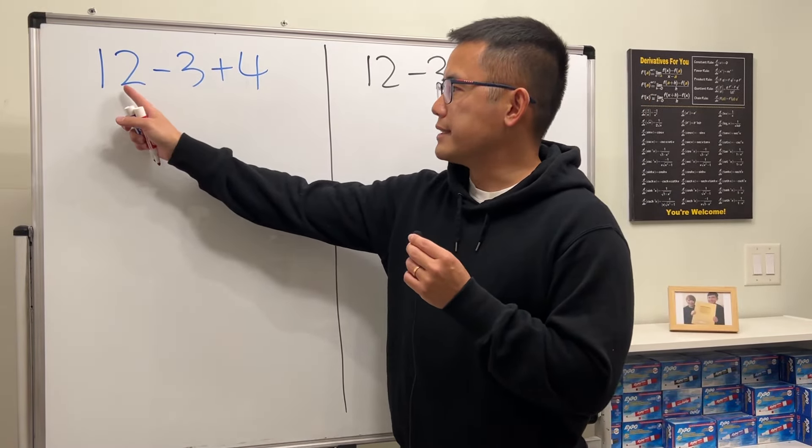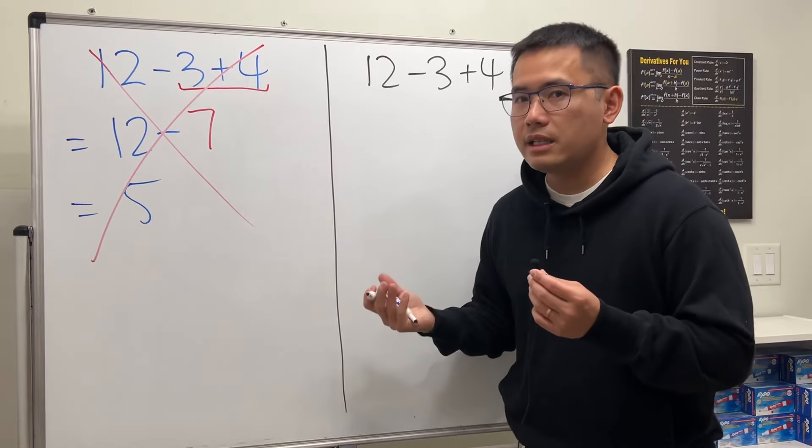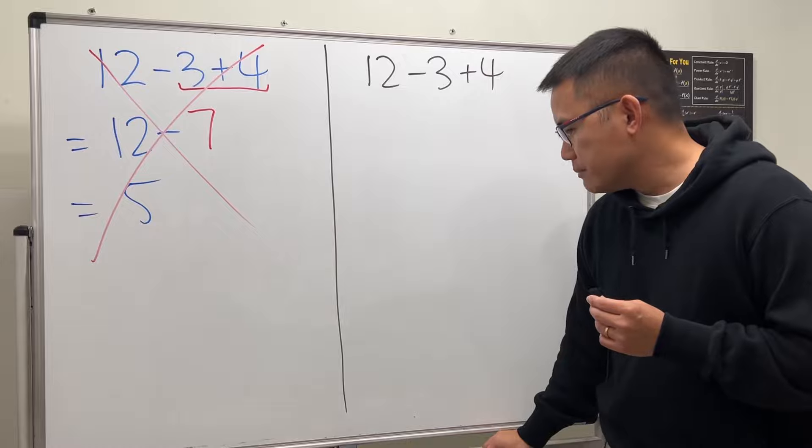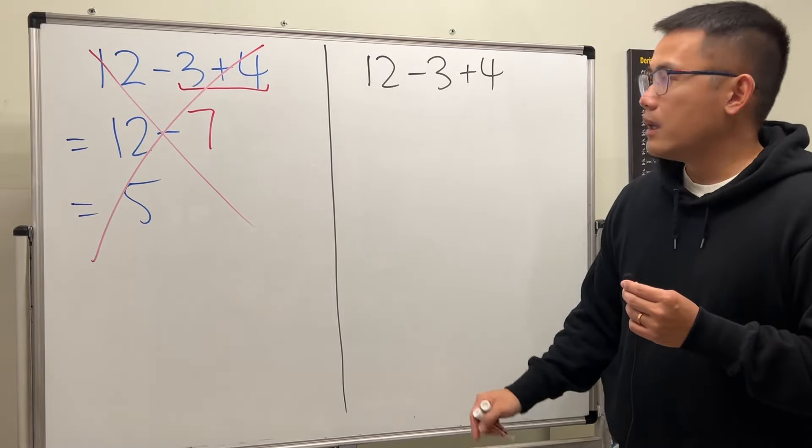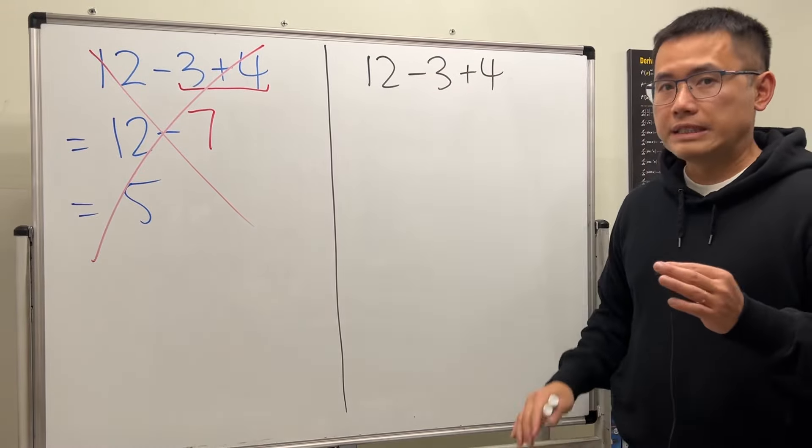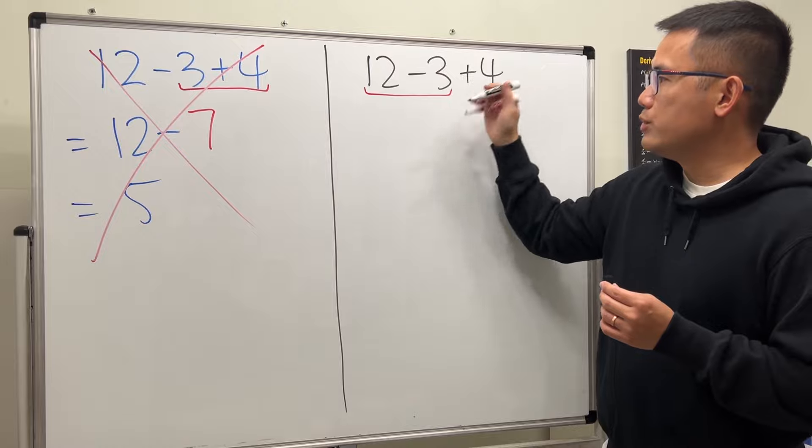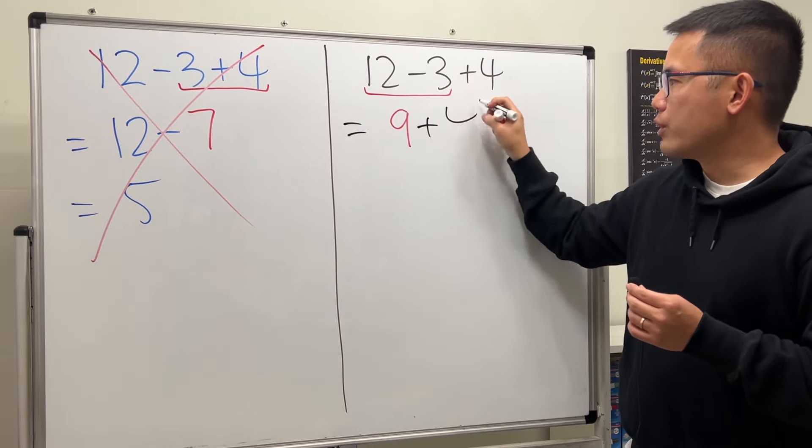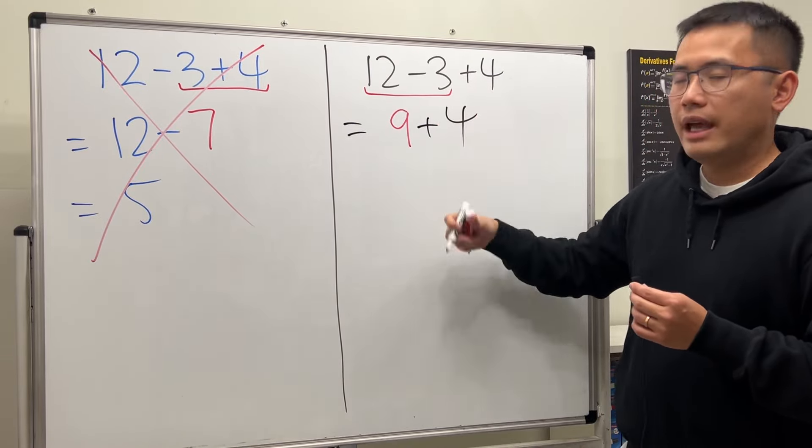This is incorrect because that's not the correct order of operation. This is how you do it: 12 minus 3 plus 4. Plus and minus they are on the same level in the order of operation, just go ahead and do it from left to right. 12 minus 3 we get 9. After that we add 4 to it, and then 9 plus 4 we get 13.